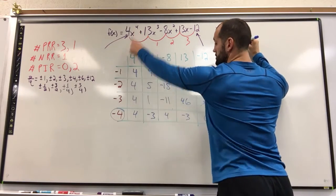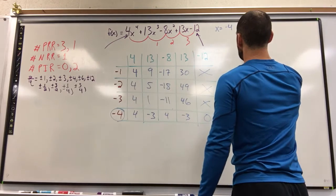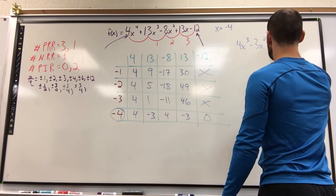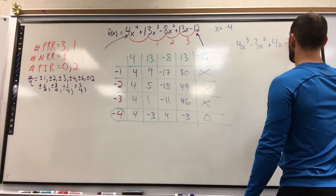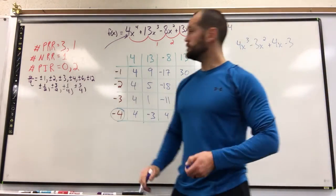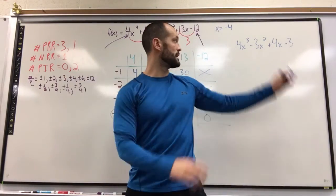This would form the polynomial, because we started at fourth degree, drops down one. 4x to the third minus 3x squared plus 4x minus 3. Now you can go through all of this again with a brand new polynomial.